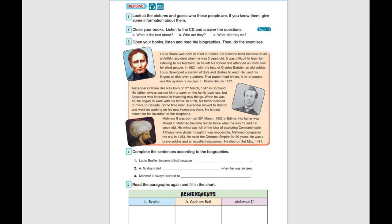Mehmed II was born on 30th March 1432 in Edirne. His father was Murad II. Mehmed became sultan twice when he was 12 and 19 years old. His mind was full of the idea of capturing Constantinople. Although everybody thought it was impossible, Mehmed conquered the city in 1453.